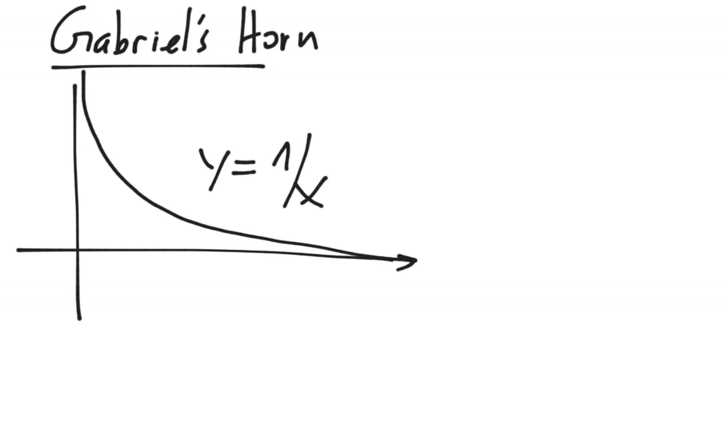And Gabriel's Horn looks like this. We take the function y equals 1 over x, and we only look from x equals 1 to infinity, so really we can ignore the top part. But we take this blue region here, and we're going to revolve this around the x-axis like this.